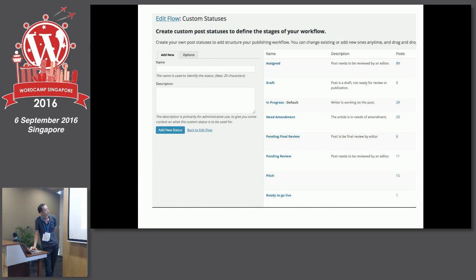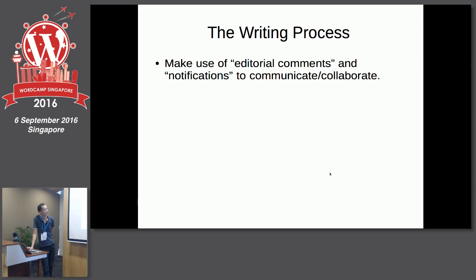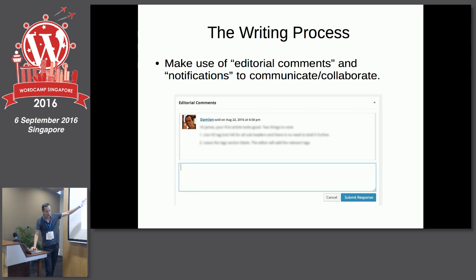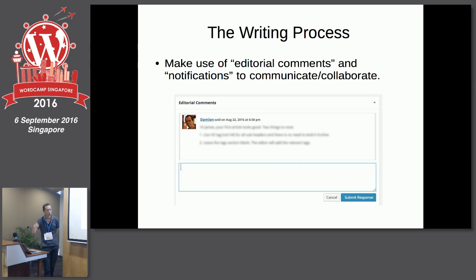This is what Edit Flow looks like — it allows you to set up all the different statuses. We also use the editorial comments and notification features to notify the writer about what went wrong with their article — what to amend and what to fix. I can write something like 'this article is not good enough, it's not following the guidelines, the image is not clear enough,' and the writer receives an email. They go in, check the amendment status, make changes, resubmit, and the whole editing process starts again.